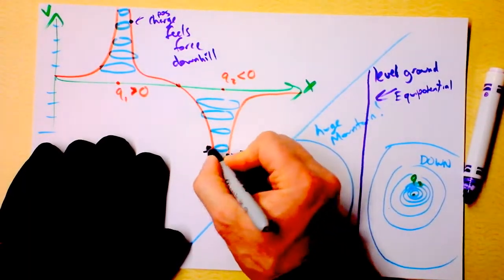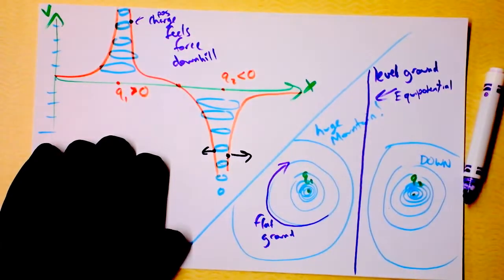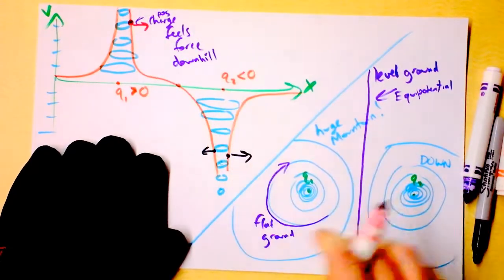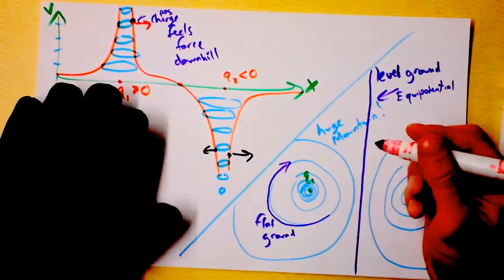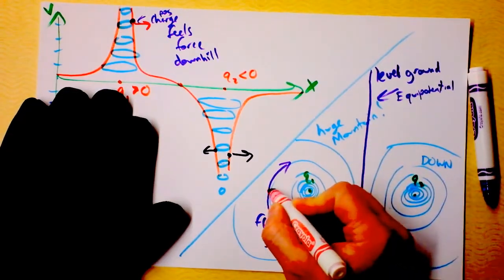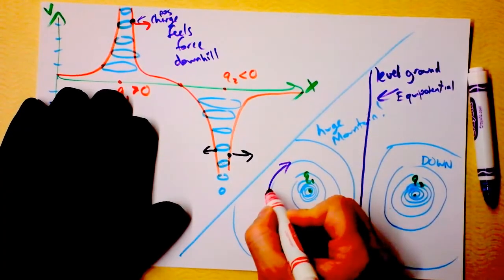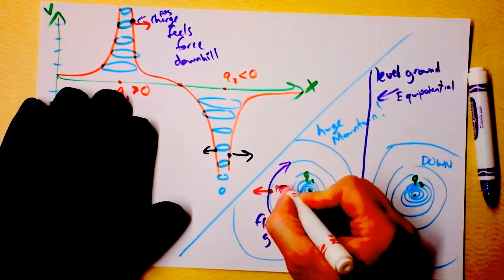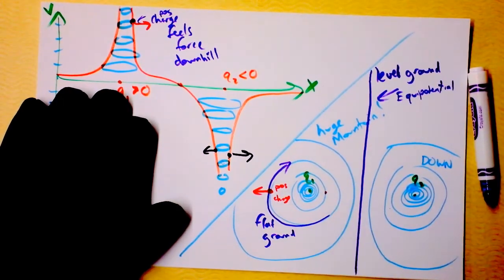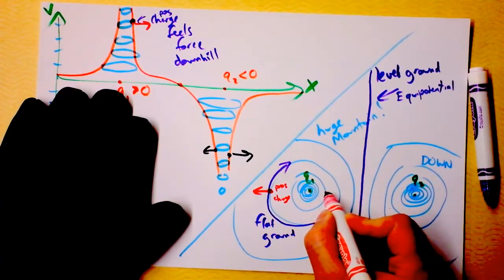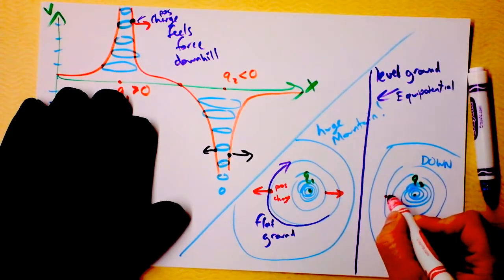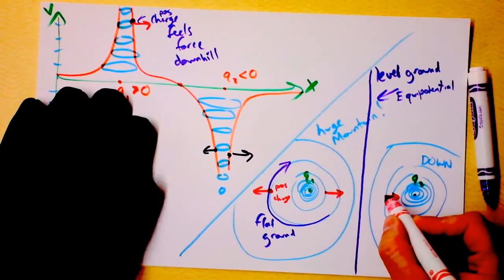And if I put a negative charge right here, that charge will feel a force in that direction. But if I put a positive charge right here, that charge will feel a force in that direction — it will want to go downhill. Similarly over here, if I put a positive charge right here, it wants to go downhill, and this is a huge mountain, so the positive charge will feel a force in that direction. And if there's a positive charge right here, it will feel a force — down the mountain — in this direction. If I put a positive charge right here, it would feel a force exactly that direction, right down the hole.